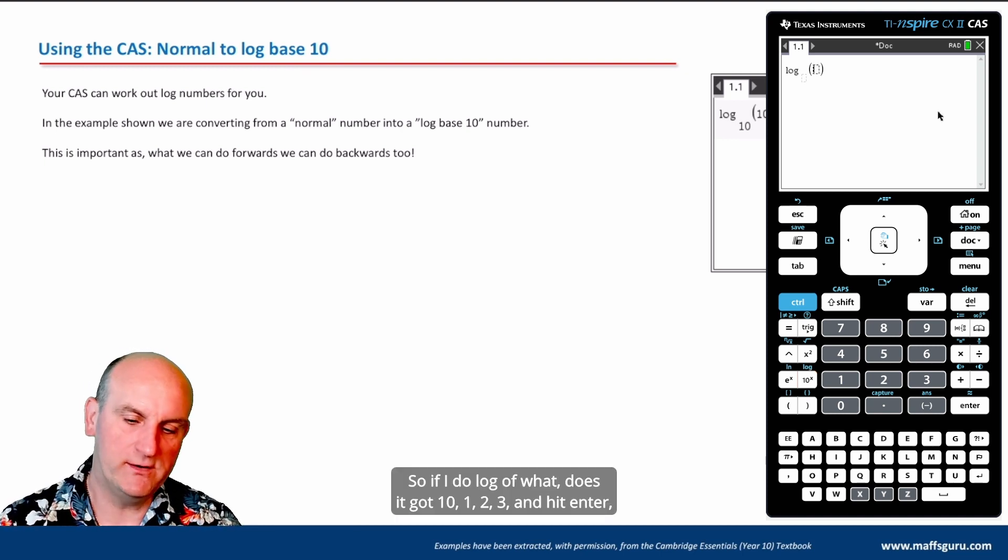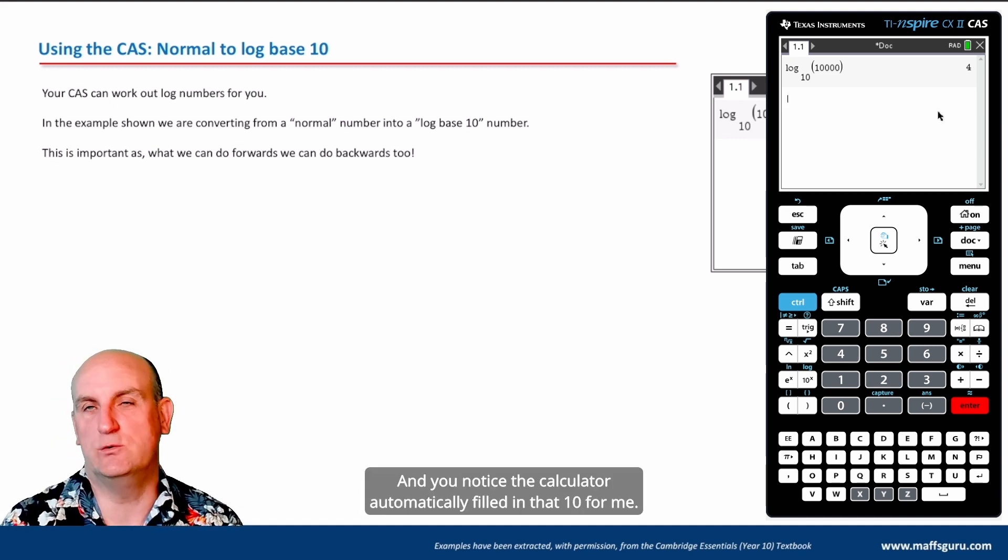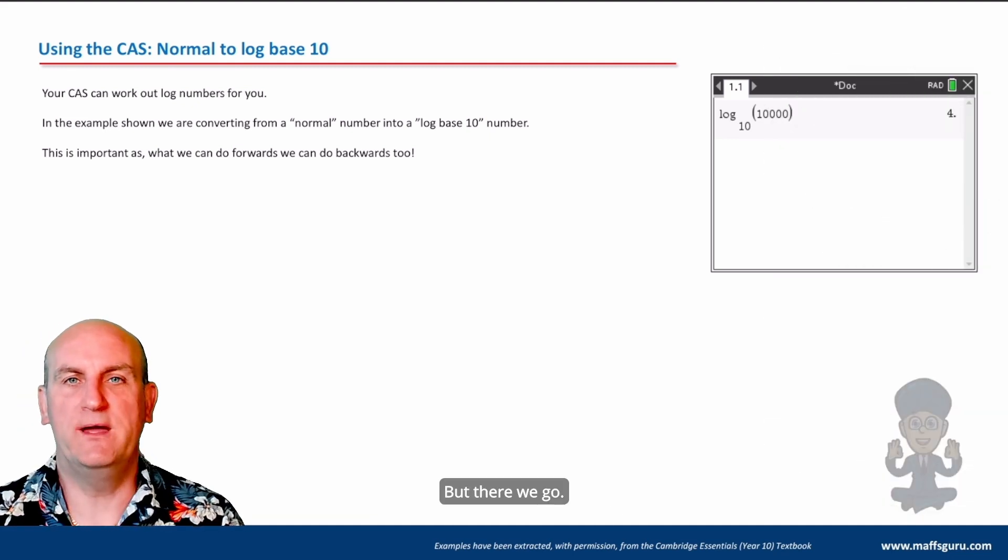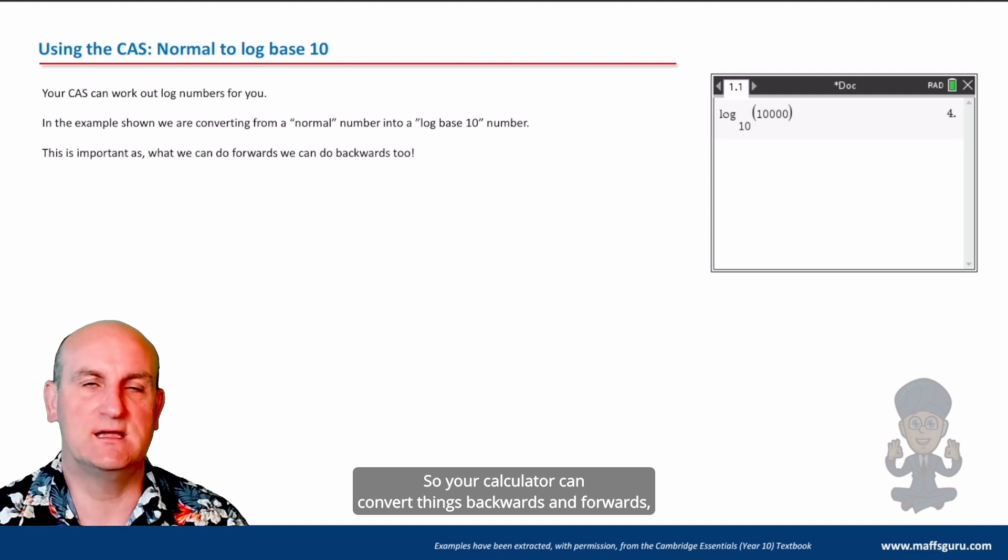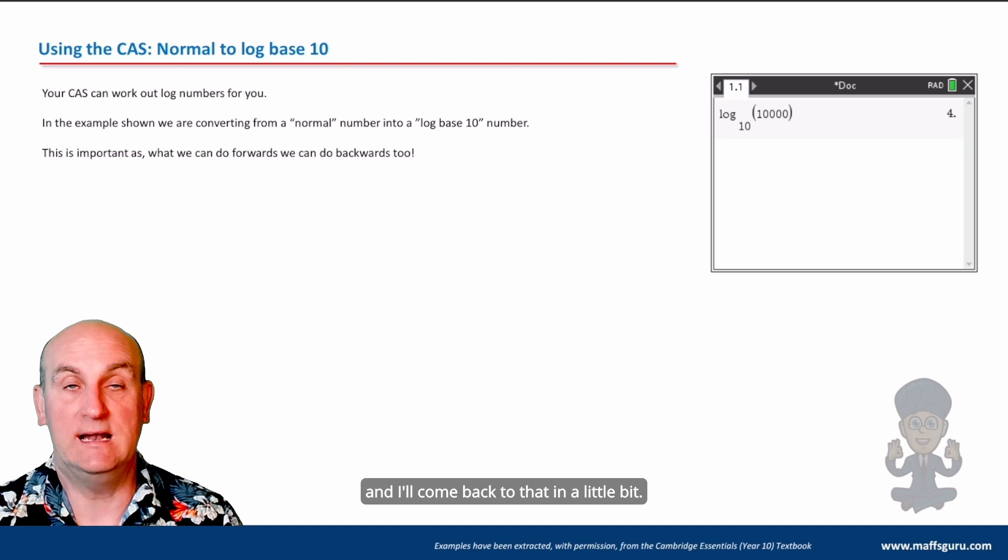So if I do log of 10,123 and hit enter, it comes out as four. And you notice the calculator automatically filled in that 10 for me. Making my life so much easier. So your calculator can convert things backwards and forwards. And I'll come back to that in a little bit.